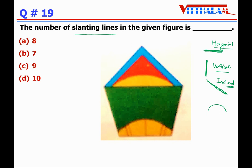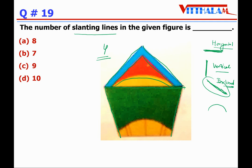Now let's count the slanting lines. This one is first, this one is second, this one is third, this one is fourth. We need to be careful — if a line is on the border or is a curve, we will not count it. So this one is fifth, this one is sixth. So till now we have six slanting lines.